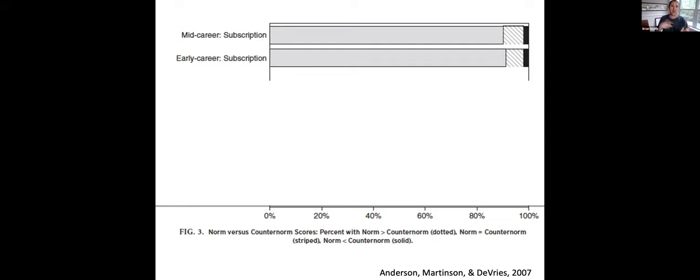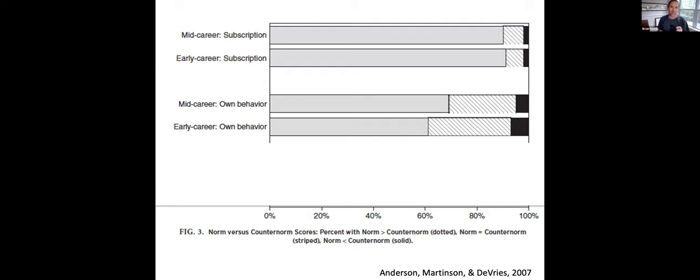In black are those that said, no, I think science should operate by the counter norms over the norms. Almost no one. So then Anderson and her colleagues said, okay, don't tell me what you endorse, how you think it should be. Tell me how you behave. What do you do in your everyday research? And it looks like this.